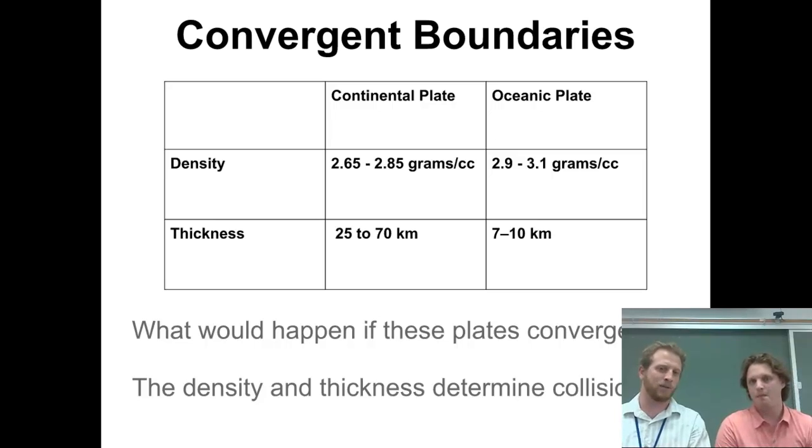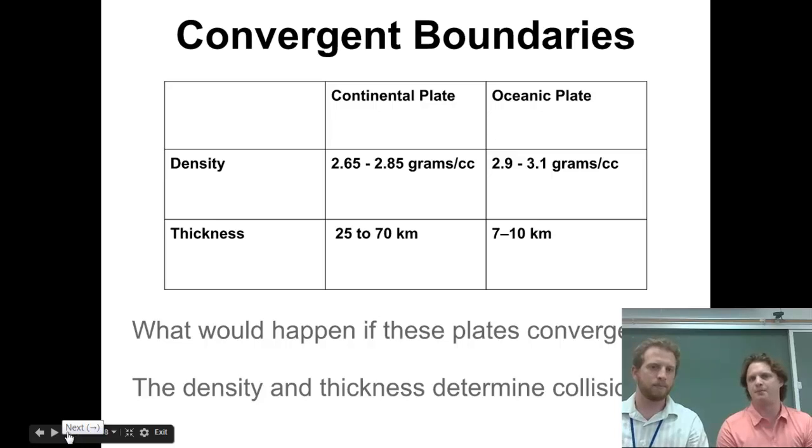If they're more dense and they converge, the more dense one will go underneath. We've got two different types of plates - continental and oceanic. The continental is less dense and more thick. The oceanic is thin and more dense.